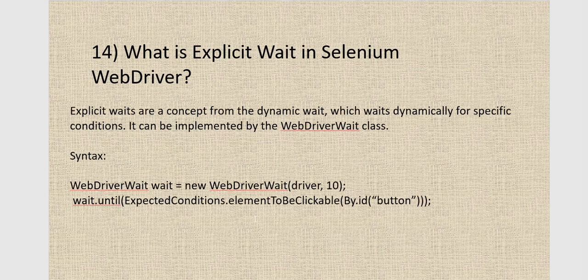The next question is: what is explicit wait in Selenium WebDriver? Explicit wait is a dynamic wait that waits only for a specific condition — it tells the WebDriver to wait until a particular condition is satisfied. It is implemented using the WebDriverWait class. The syntax is: WebDriverWait wait = new WebDriverWait(driver, time). Then use wait.until(ExpectedConditions...) with conditions like elementToBeClickable, visibilityOfElementLocated, or alertIsPresent.